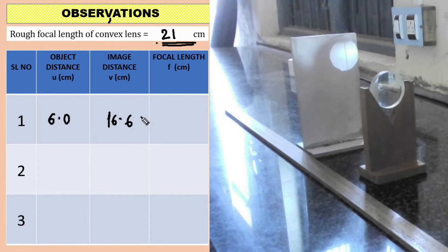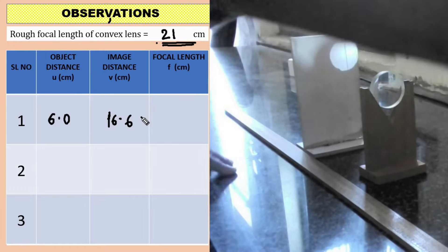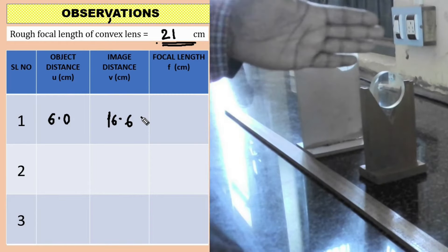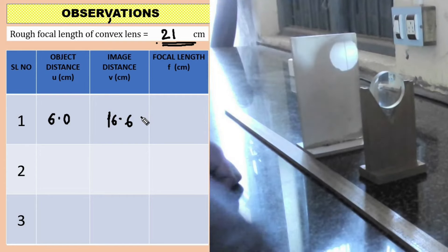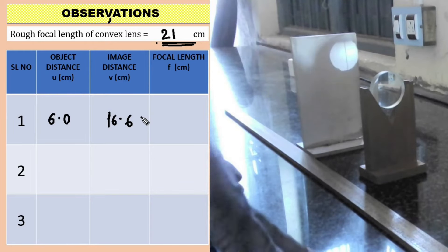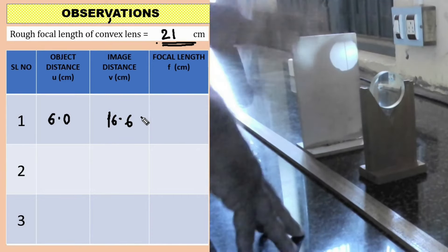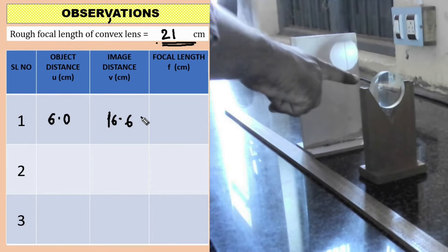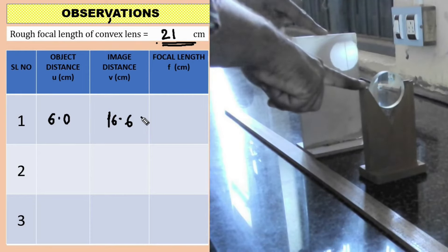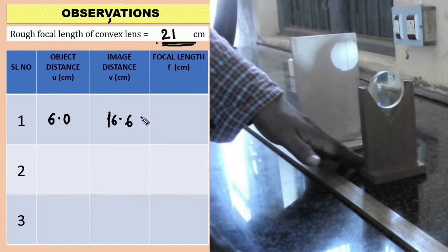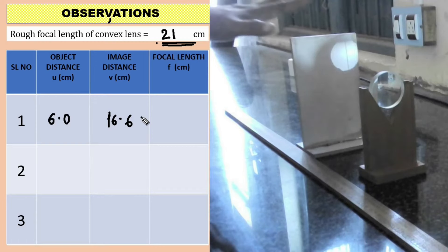Students, observe — this is the direction of the incident light. Since the object is a virtual object, when we are measuring the object distance, we are moving in the direction of the incident light. Therefore, the object distance is positive. Similarly, the image is also formed in the direction of the incident light. Therefore, in this experiment, both the object distance and the image distance are positive.